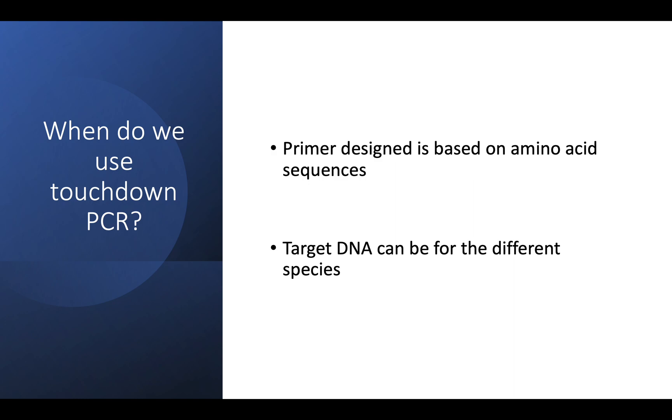Or sometimes when we design a primer, we would use one species for primer design, but we would actually use the target DNA for a different species. So in any of these conditions, the primer cannot bind to the template DNA. So a stringent condition is actually required in order to facilitate the primer binding. And touchdown PCR outcompetes any nonspecific product or any kind of primer dimer formation. So that is when we use touchdown PCR.